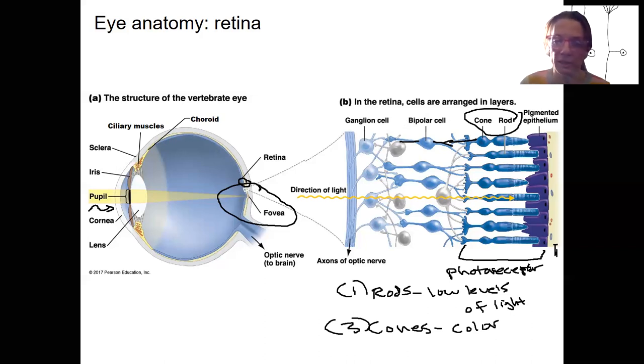Bipolar cells are going to transmit the information to ganglion cells. So these arrows going this way. This is neural information. Light goes this way. Neural information goes that way.